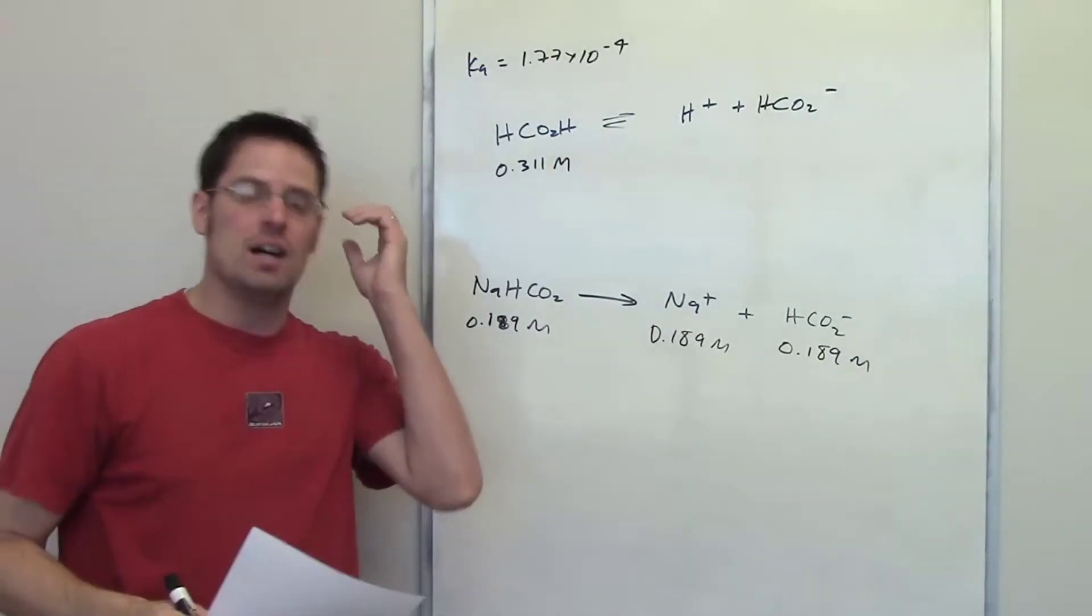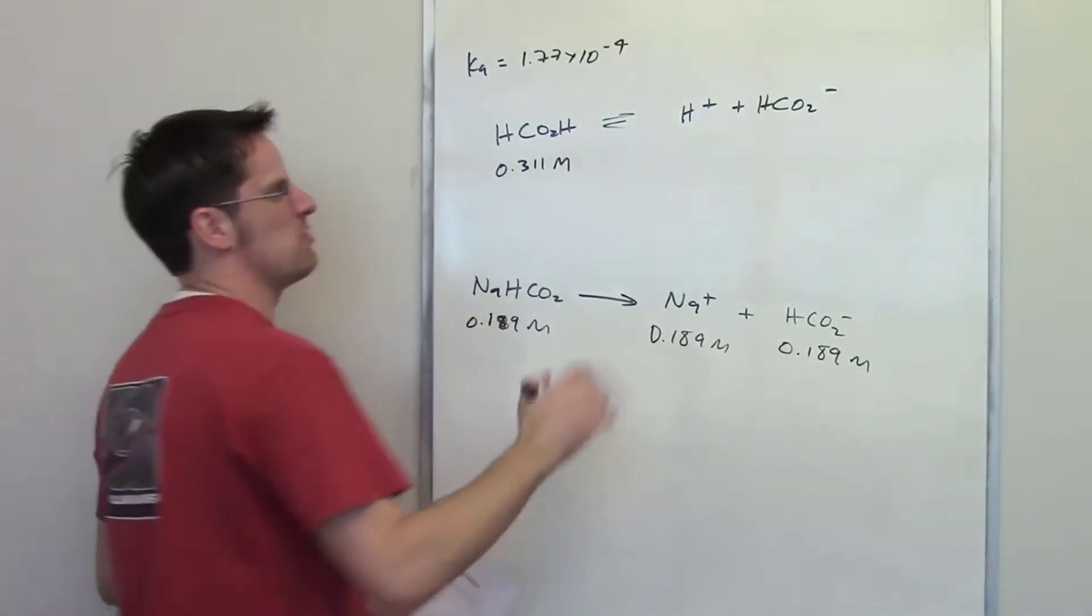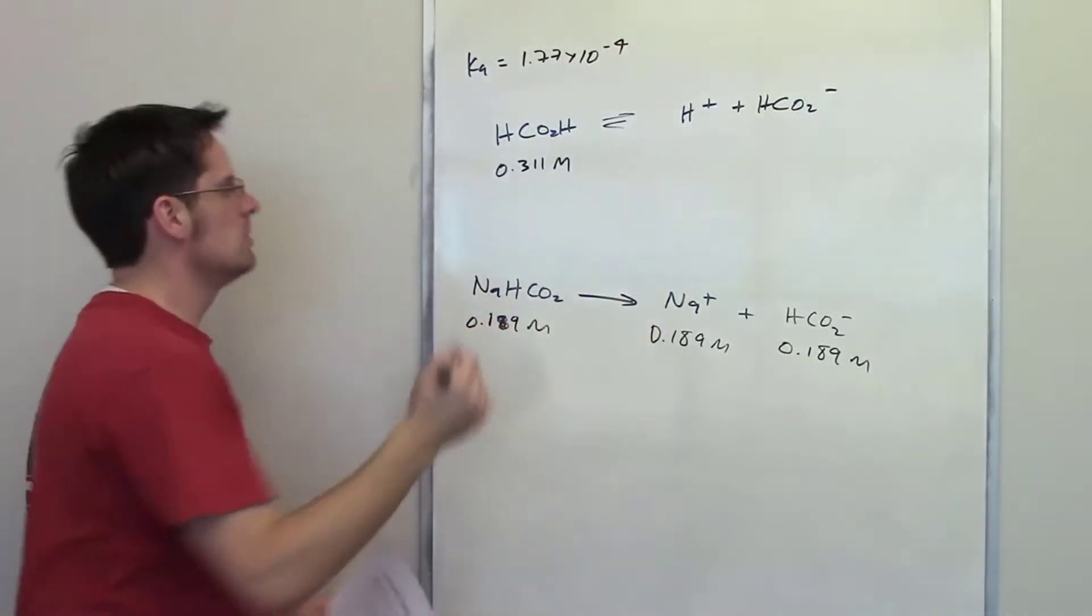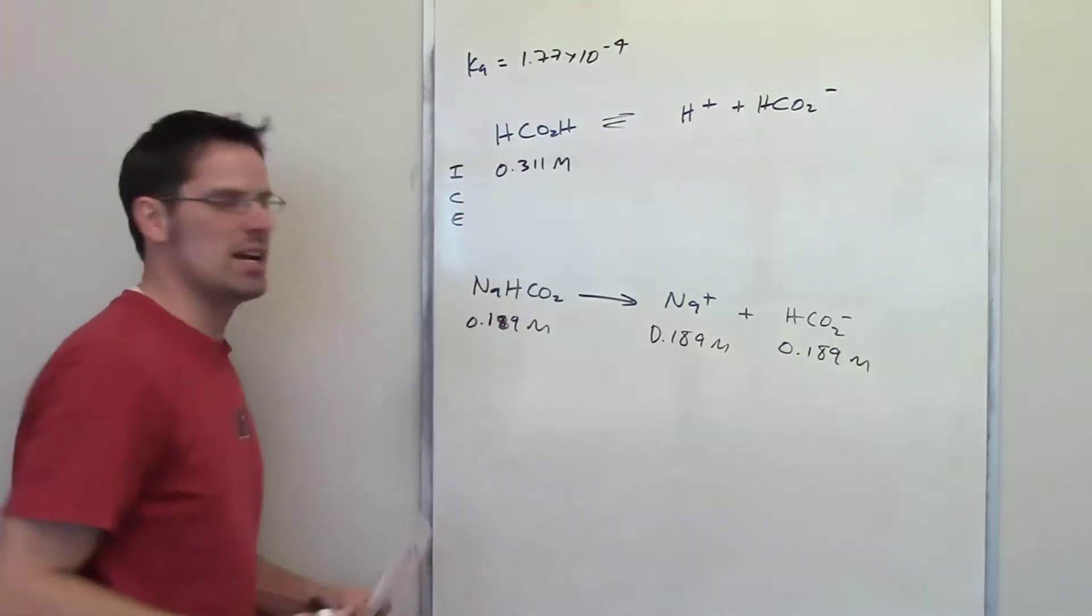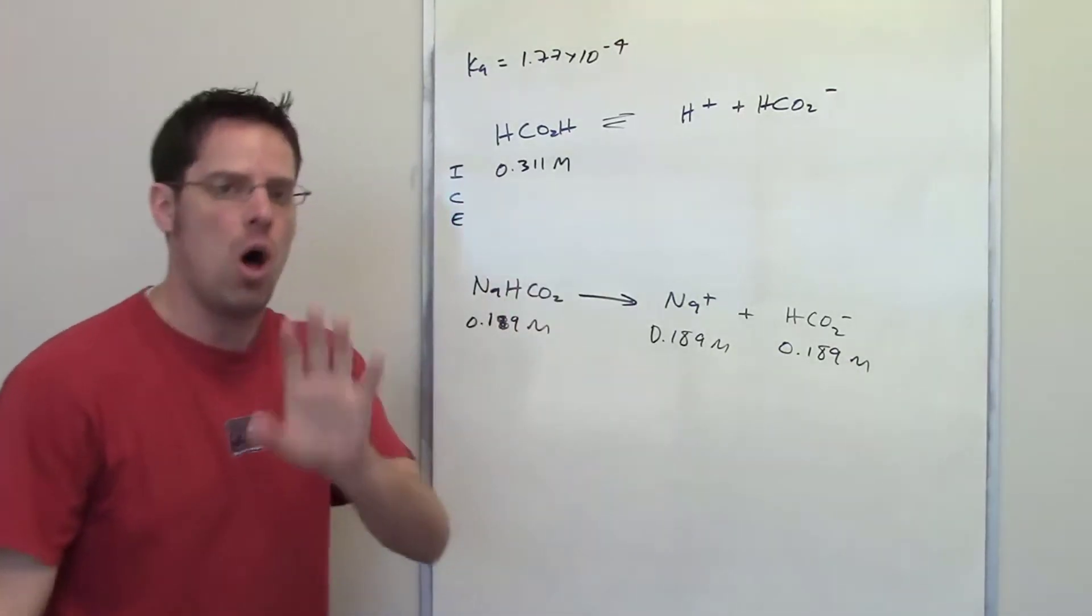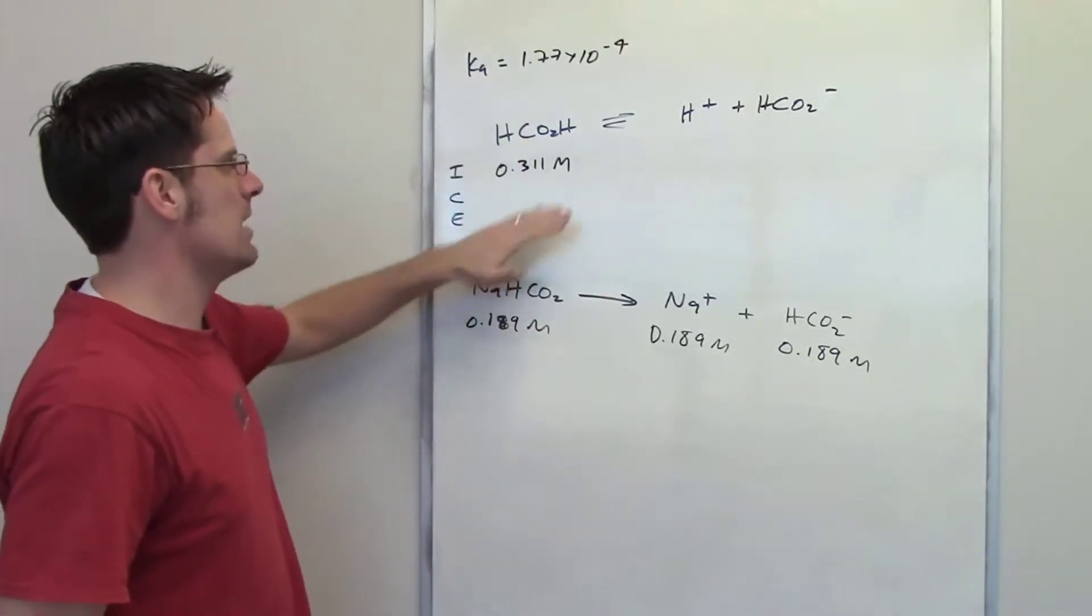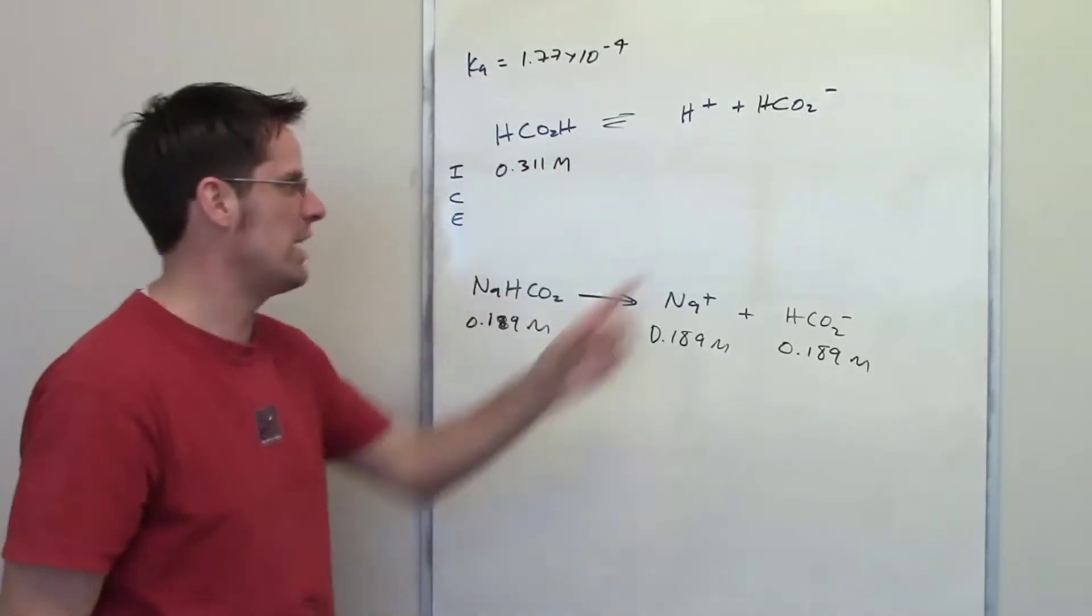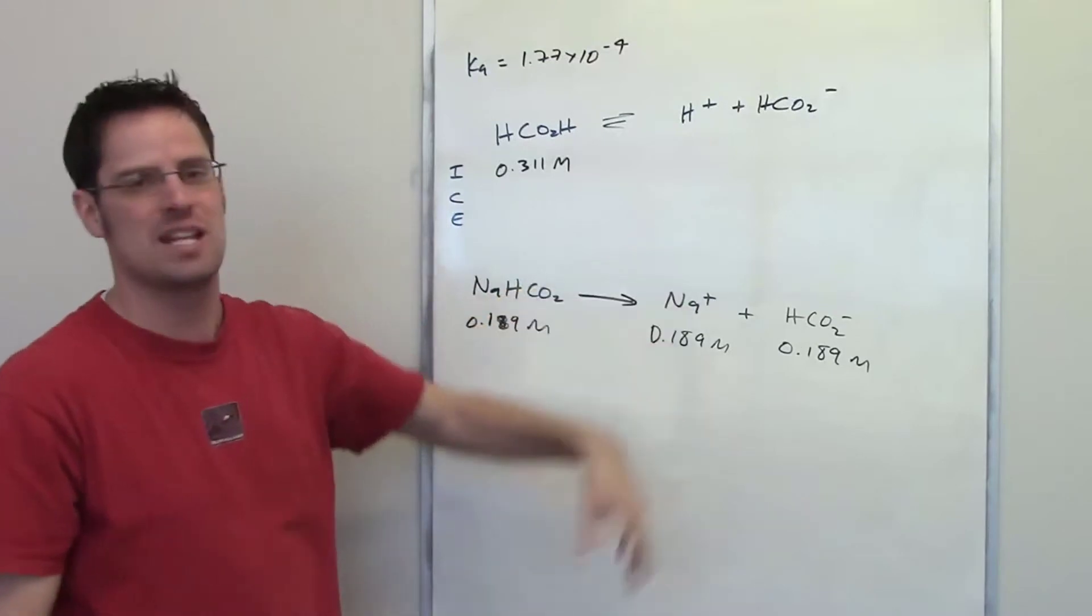In order to determine the final pH, we're going to need to determine the final equilibrium concentration of H plus. How do we do that? By doing an ICE table. Now in the past, when we've done ICE tables with weak acids, all we've needed is the Ka, and then we've been able to do some math to figure out the final equilibrium concentration of H plus, and then calculate the pH from there.